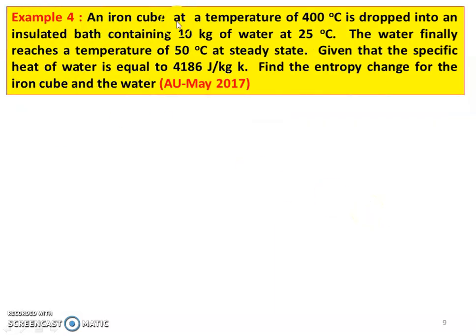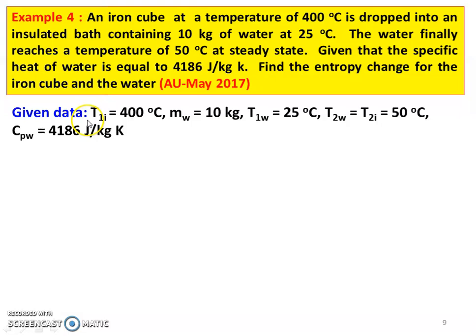Example number 4: An iron cube at a temperature of 400 degree Celsius is dropped into an insulated bath containing 10 kg of water at 25 degree Celsius. The water finally reaches a temperature of 50 degree Celsius at steady state. Given that the specific heat of water equals 4186 joules per kilogram Kelvin. Find the entropy change of the iron cube and the water. This is a May 2017 question.